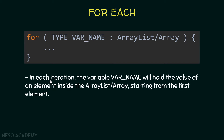In each iteration, the variable var_name — the variable that we declared — will hold the value of an element inside the array list or the array. This will start from the first element. So in the first iteration, this variable will contain the value of the first element. In the second iteration, it will contain the value of the second element, and so on.